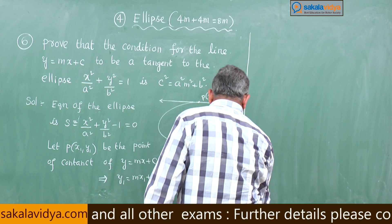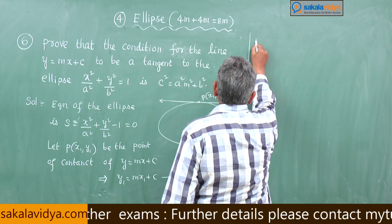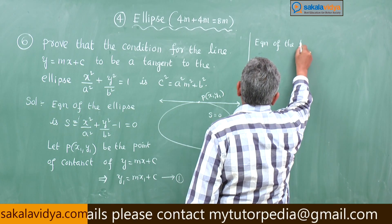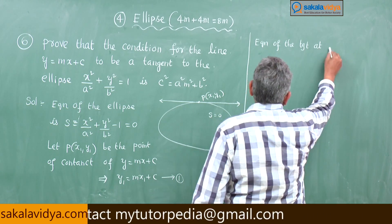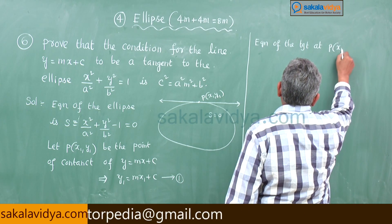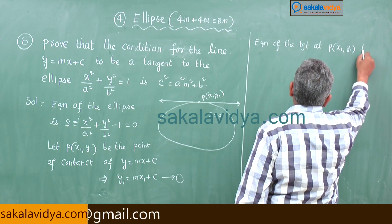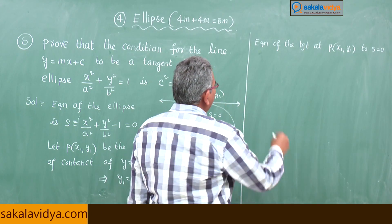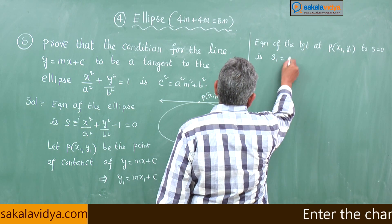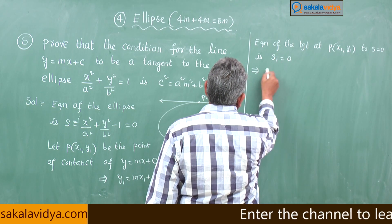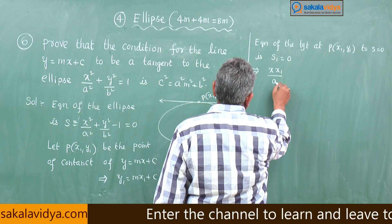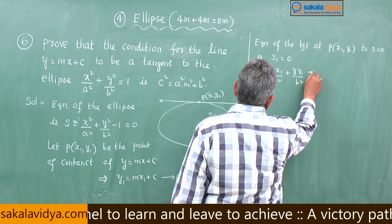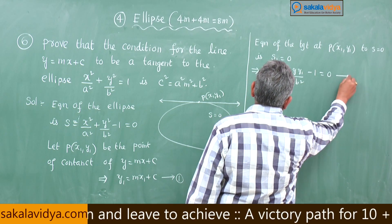Now let us find the equation of the tangent at P(x₁, y₁) to S = 0, which is S₁ = 0: that gives x·x₁/a² + y·y₁/b² − 1 = 0 — call this equation 2.